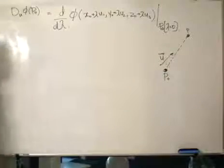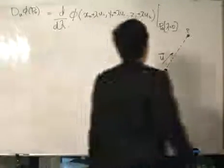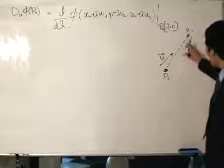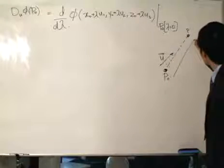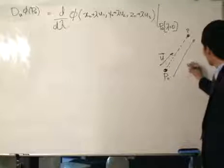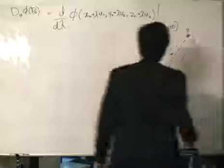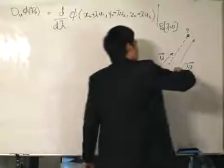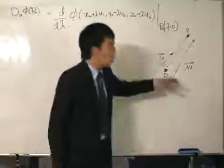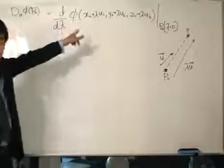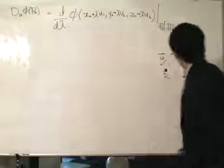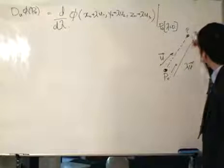Let's discuss why it is lambda. I'm at p0, and to reach p I take the unit vector u and multiply it by lambda, the scalar factor, and that brings me from p0 to p. Both p and p0 have associated phi values when put inside the function. If lambda is small, I will only travel a small distance along the line, and the new value of p will be nearby.